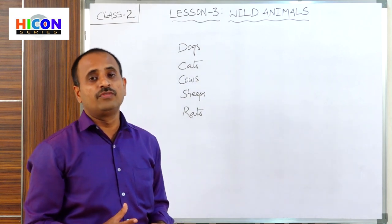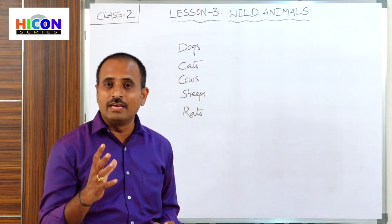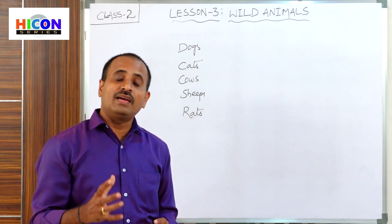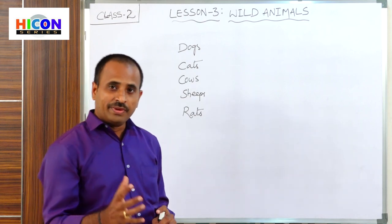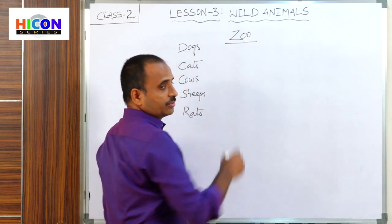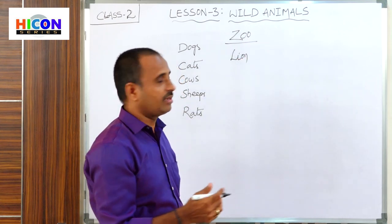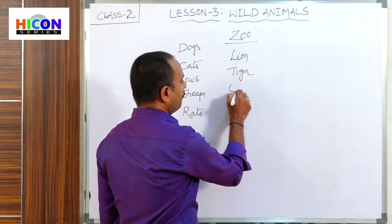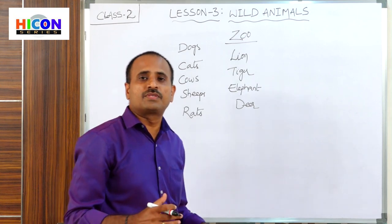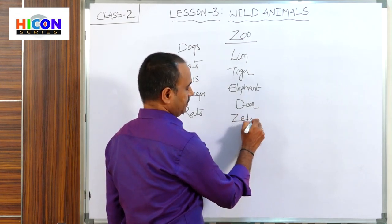When you go to a zoo, you observe different types of animals. Can you give the names of animals you see in the zoo? Generally in the zoo you observe lion, tiger, elephant, deer, zebra, and giraffe.